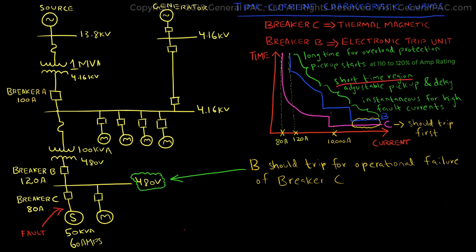This is where the short-time region comes into play. We will use this region to define an additional delay time of 6 cycles, which would prevent breaker B from tripping simultaneously with breaker C.